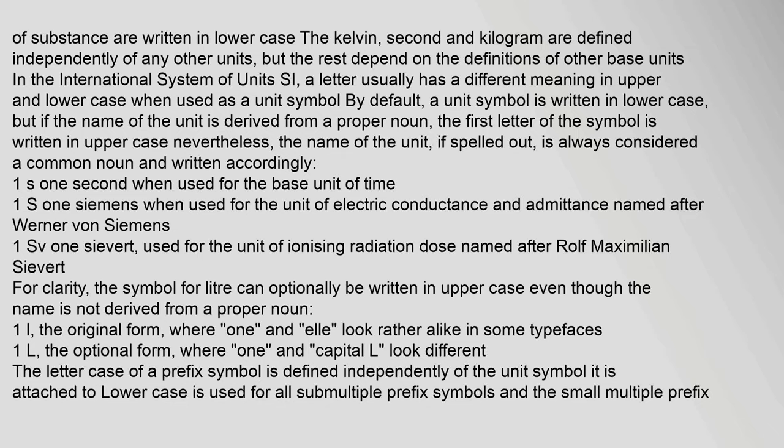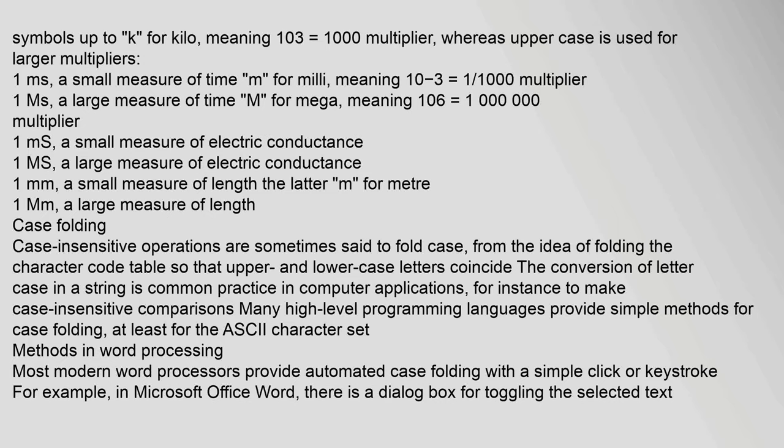Nevertheless, the name of the unit if spelled out is always considered a common noun and written accordingly — for example: one s (one second, base unit of time), one S (one siemens, unit of electric conductance named after Werner von Siemens), one Sv (one sievert, unit of ionizing radiation dose named after Rolf Maximilian Sievert). For clarity, the symbol for liter can optionally be written in upper case even though the name is not derived from a proper noun.